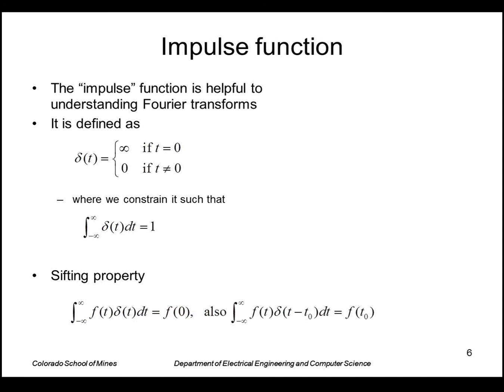So we just get f of zero as a result. Or if we write the delta function as t minus t zero, this term is zero everywhere except when t equals t zero. So again, we just sift out or pick out the term of f where t equals t zero.